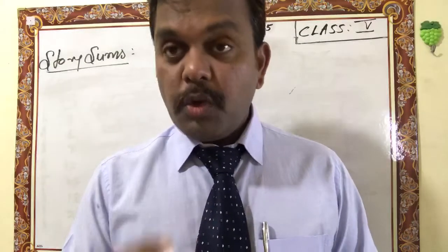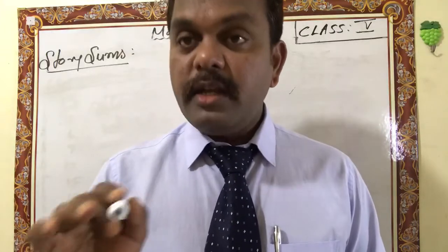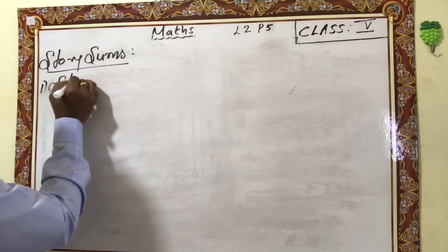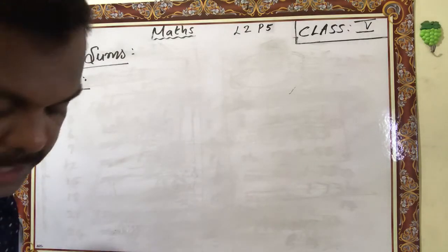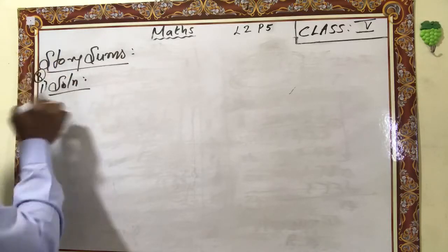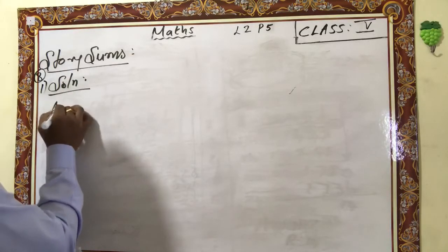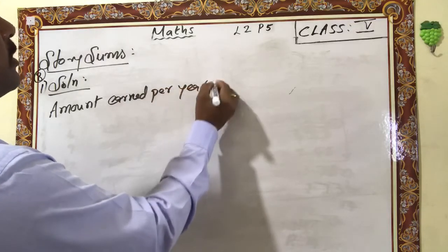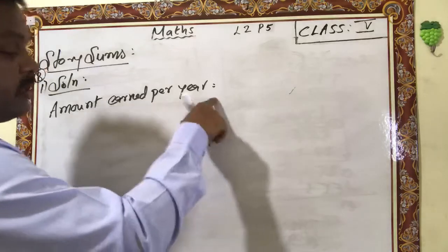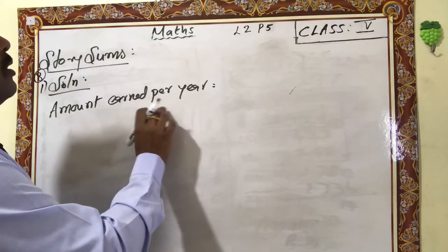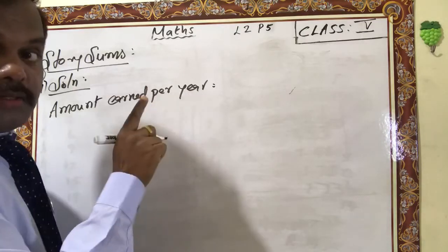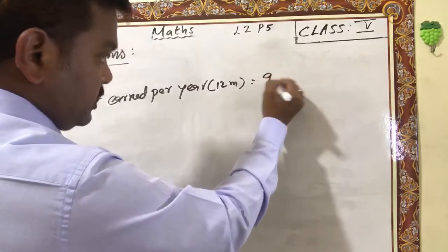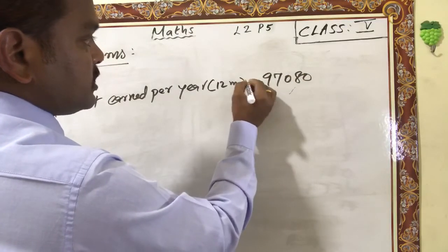Write solution. Amount earned per year — you can write per year or for 12 months, because 1 year is 12 months. Amount earned for 12 months is equal to 97,080 rupees. Next, amount earned per month: so you have to divide 97,080 divided by 12.